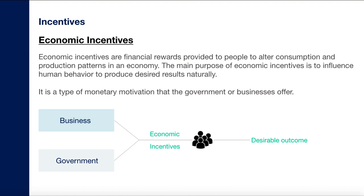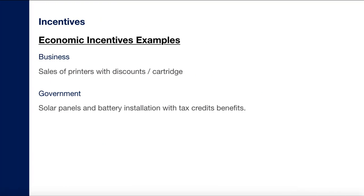Governments and businesses cannot force people into particular decisions, so incentives are put into use to make people naturally go for a particular decision. These incentives are essentially a monetary motivation that governments or businesses offer people. Two entities do this: governments, targeting citizens of the country, and businesses, targeting their audience — both provide these incentives to get a particular desirable outcome.